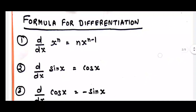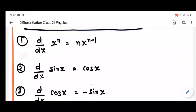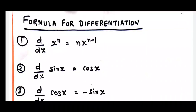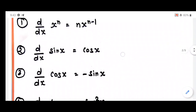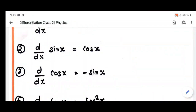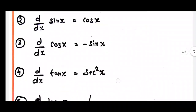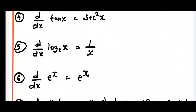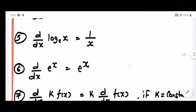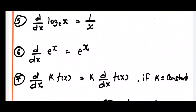I will jump to the formulas — only the portion needed in physics. The first formula: d/dx of x to the power n equals n times x to the power n minus 1. For example, differentiating x cubed gives 3x squared. Second: d/dx of sin x equals cos x. Third: d/dx of cos x equals minus sin x. Fourth: d/dx of tan x equals sec squared x. Fifth: d/dx of log base e of x equals 1 upon x. Sixth: d/dx of e to the power x equals e to the power x.